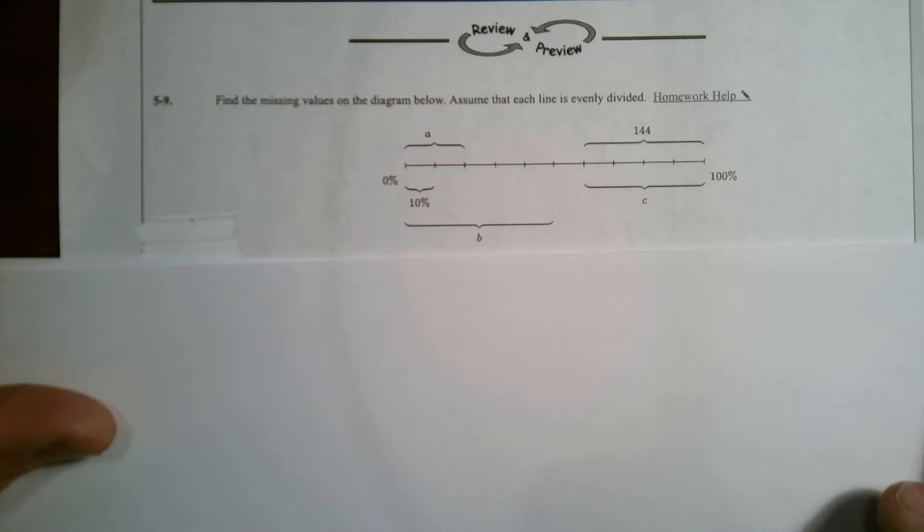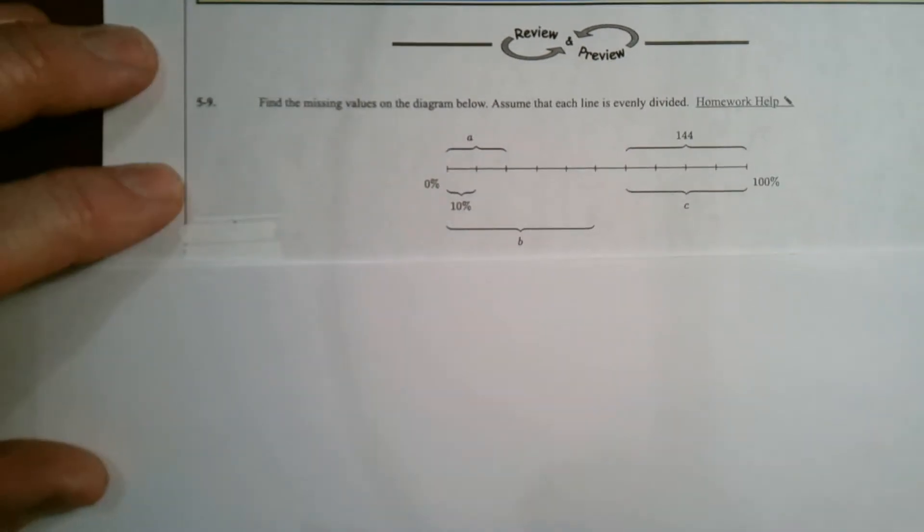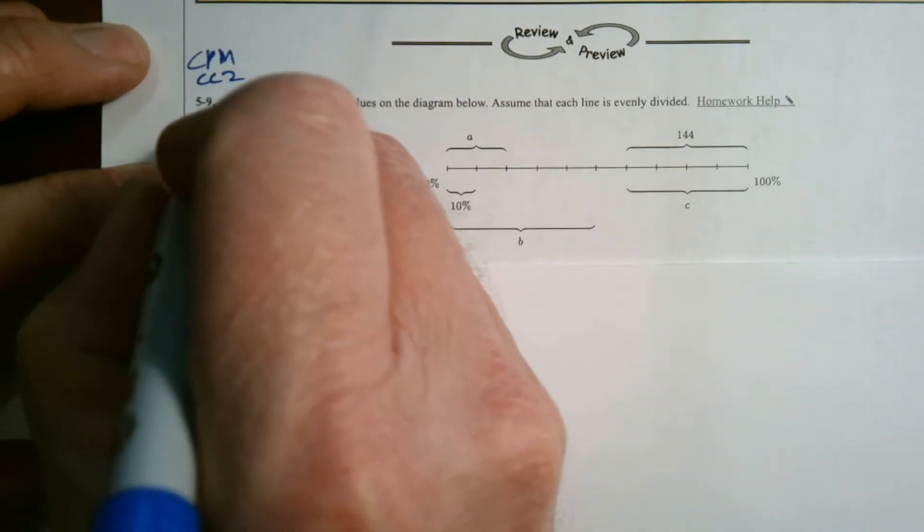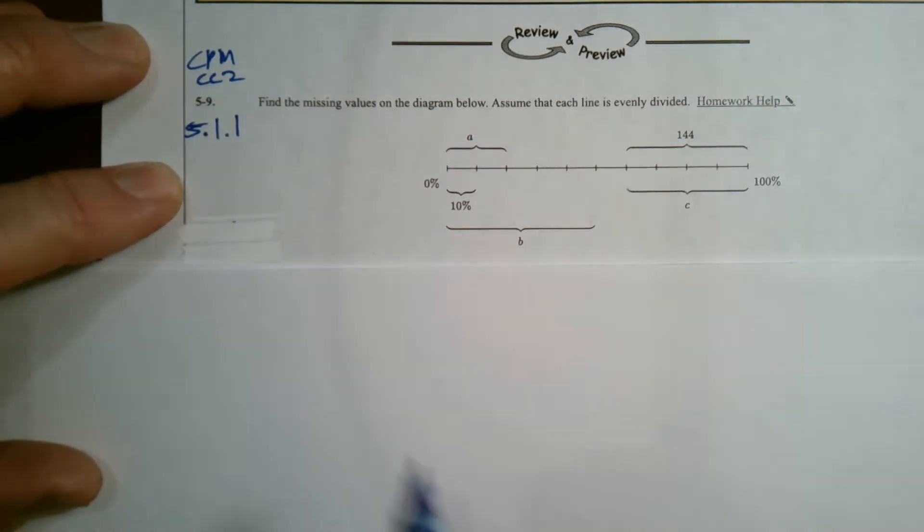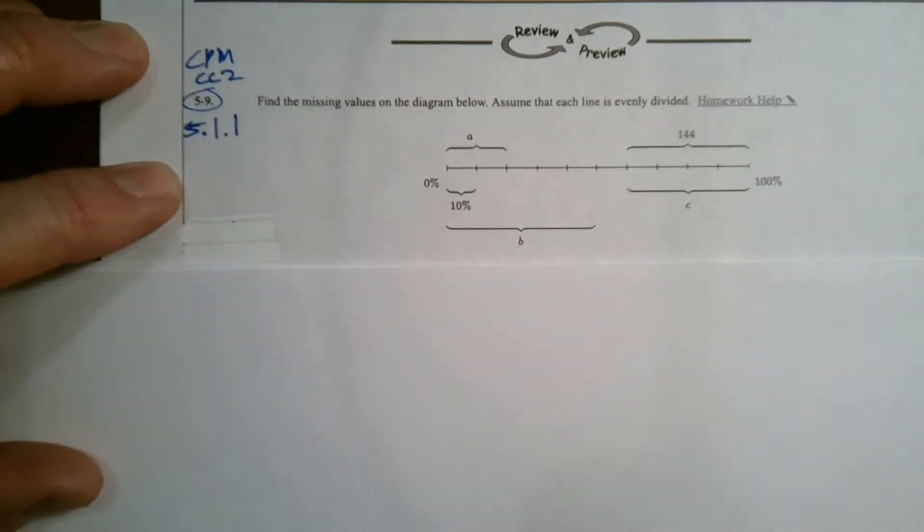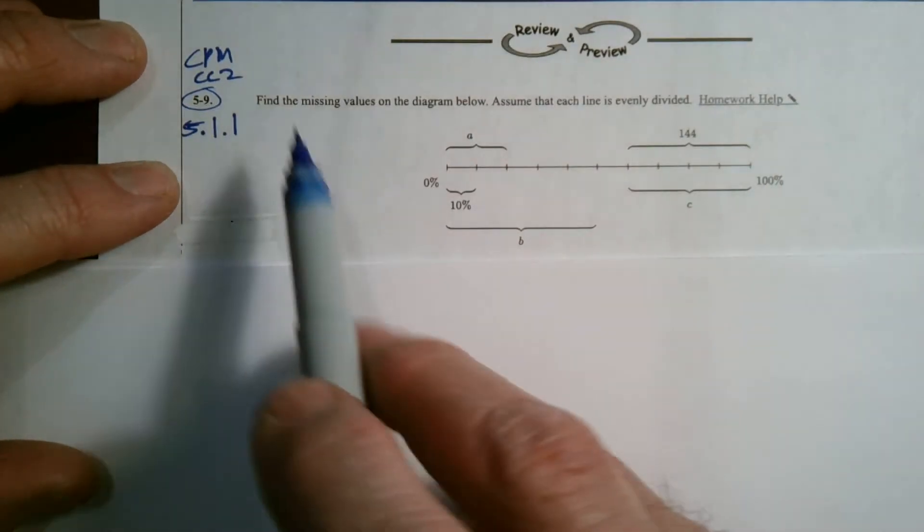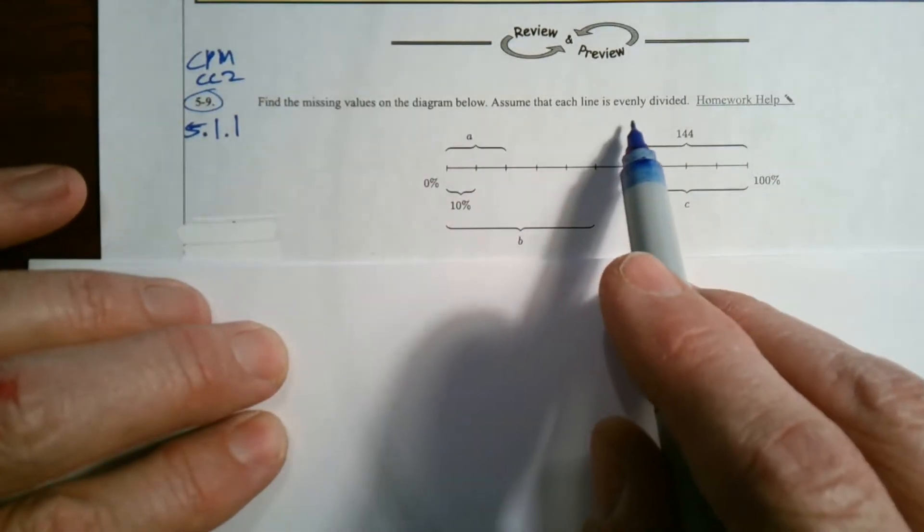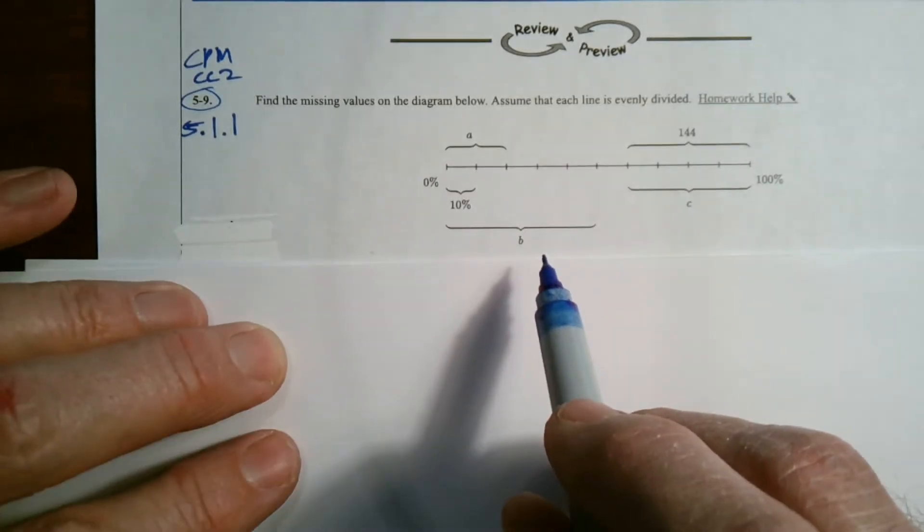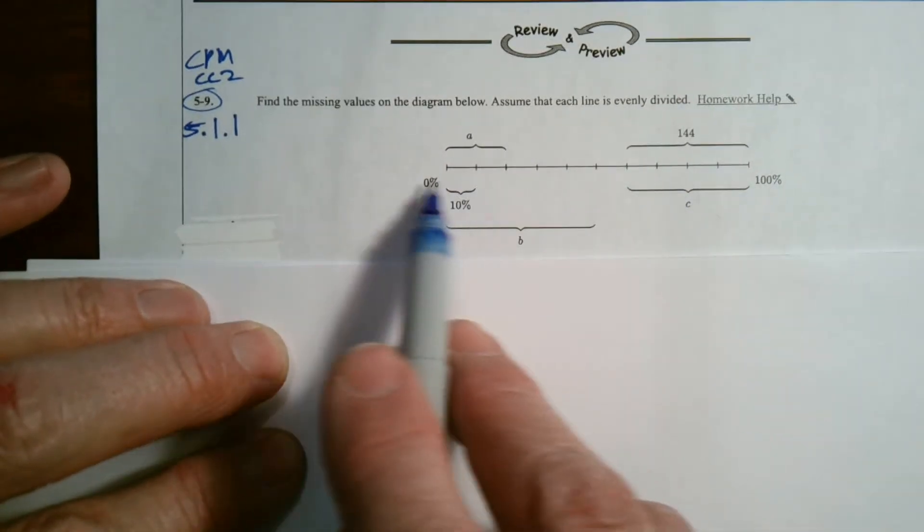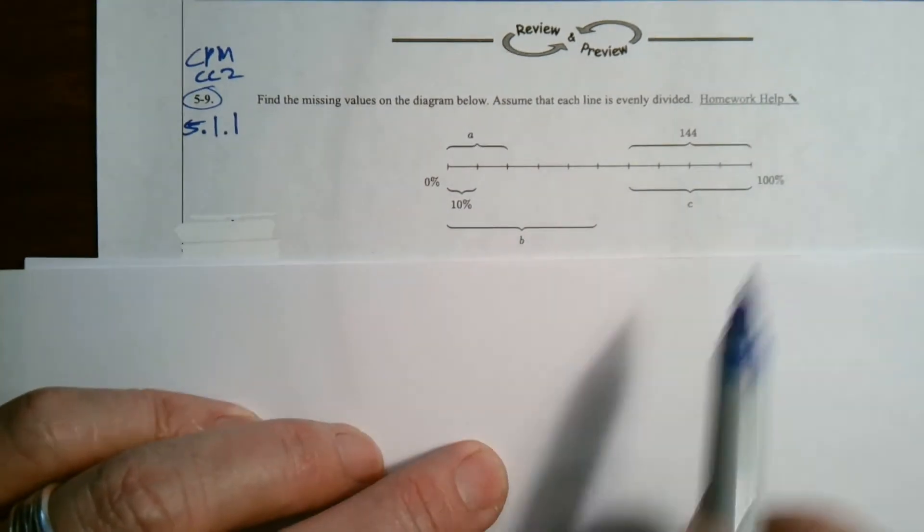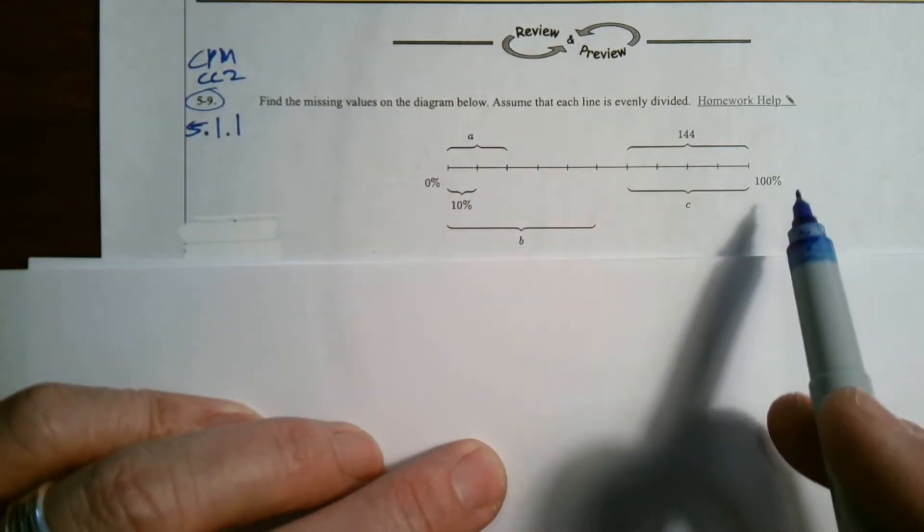And this specific problem that I'll be using comes from our CPM course 2, specifically section 5.1.1, and it's problem 5-9. So it says find the missing values on the diagram below. Assume that each line is evenly divided. So we already have this number line already drawn all divided, so I've got to use that to determine these quantities.